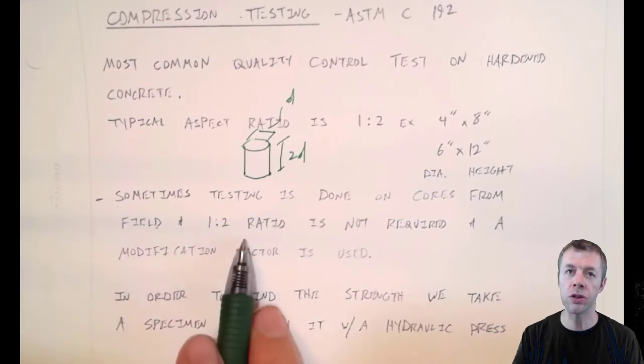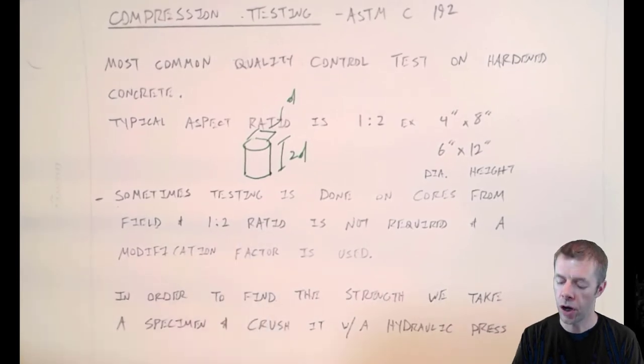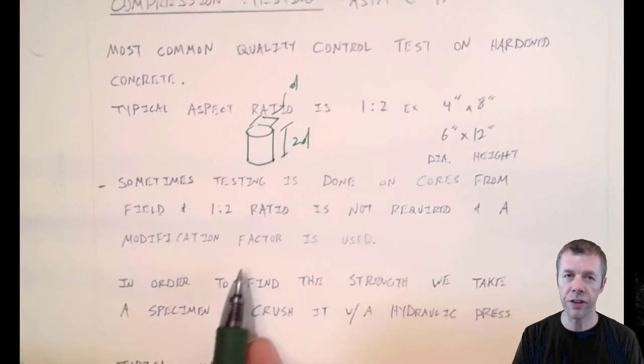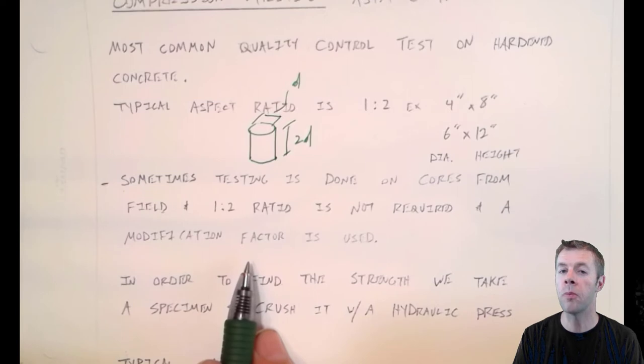And that one to two ratio doesn't always occur when you're dealing with a core. But don't worry, there's modification factors used in the ASTM specifications that help you modify what the strength you measure compared to the expected strength for a one to two ratio sample.